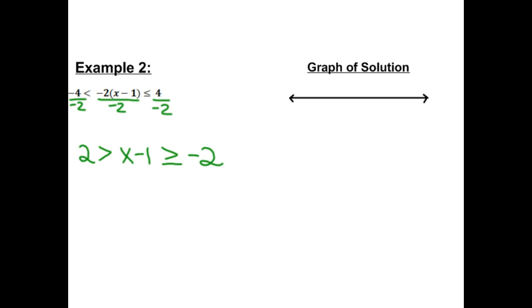I'm just going to rewrite it so we're going from smallest to biggest. So this is -2 ≤ x - 1 < 2.